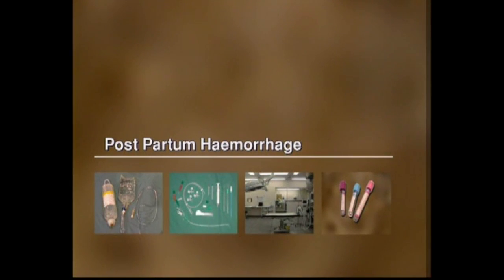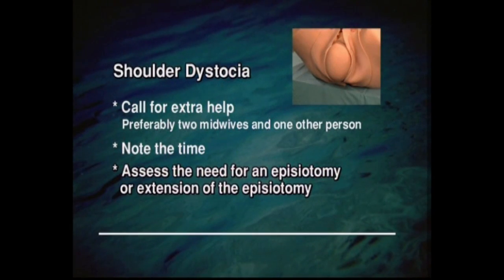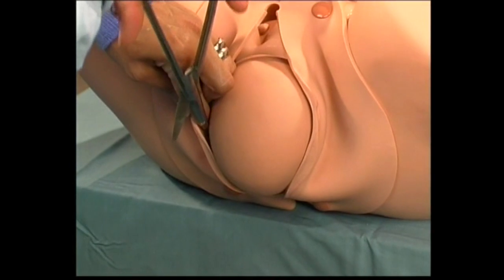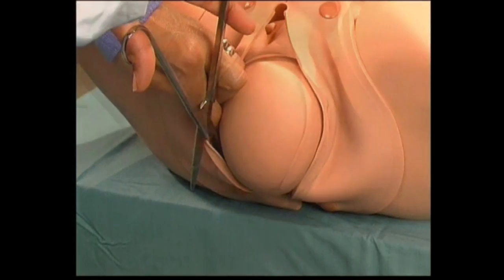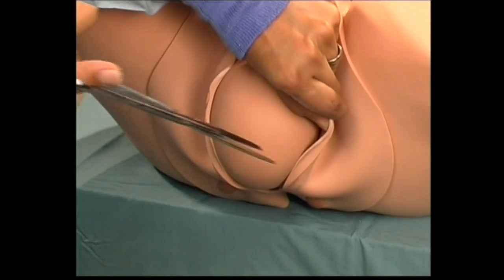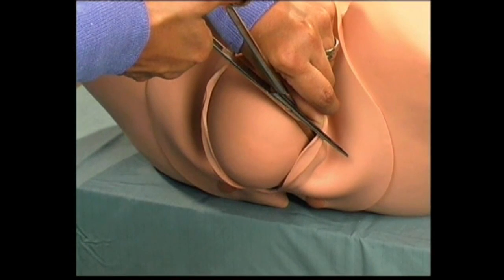The next case involves the management of postpartum haemorrhage. You must summon help urgently. This includes the senior house officer, the anaesthetist, and midwife involved with the delivery. Assess the need for an episiotomy, for extension of an existing episiotomy, or for bilateral episiotomy. This can be considered throughout the management for shoulder dystocia, particularly if one is unable to access the fetus to perform the internal manoeuvres.